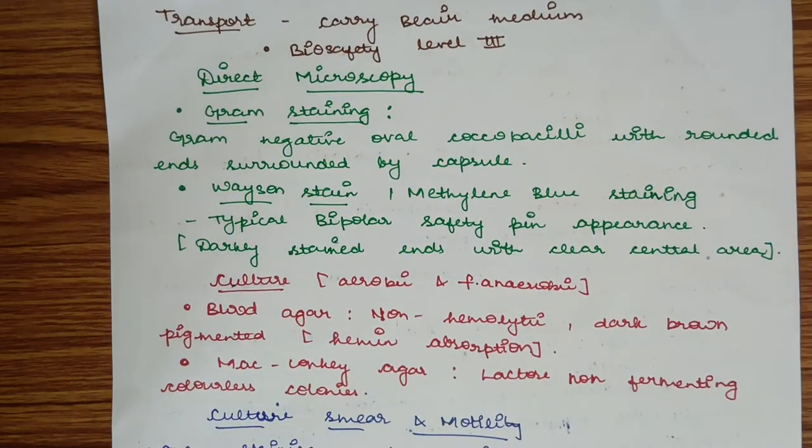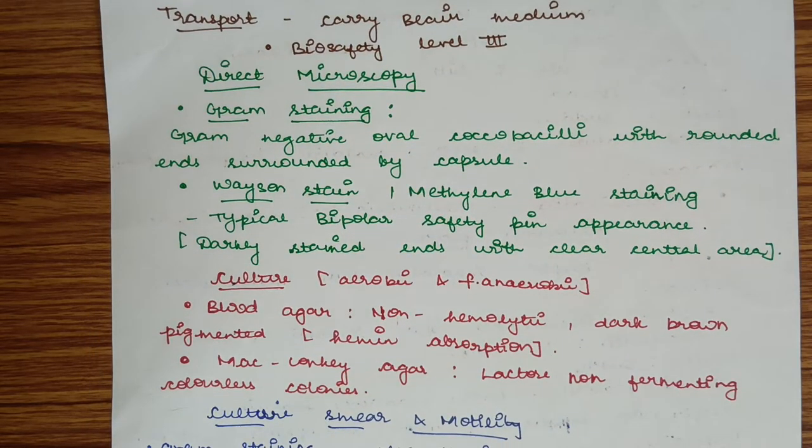Direct microscopy by gram staining shows gram negative oval coccobacilli with rounded ends surrounded by capsule. In Wayson stain or methylene blue staining, typical bipolar safety pin appearance is seen with darkly stained ends and central clear area.